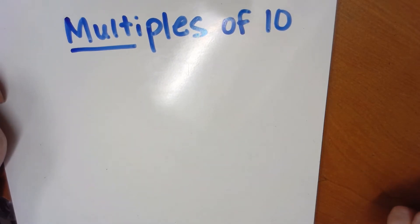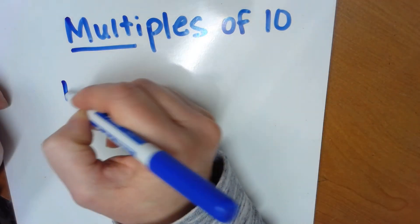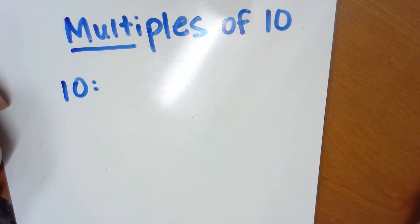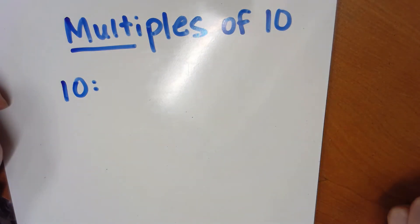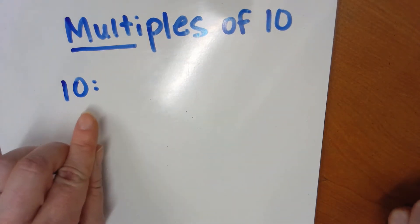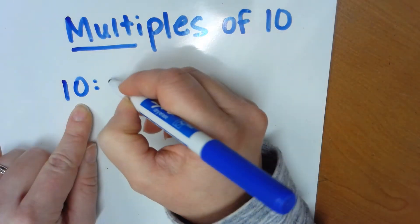Multiples go on forever, but let's take a look at maybe the first 5 multiples of 10. When I make my list of multiples, it always starts with the first number because 1 times 10 is 10.